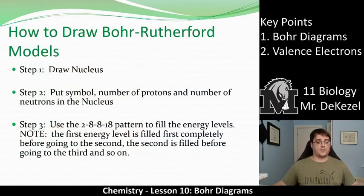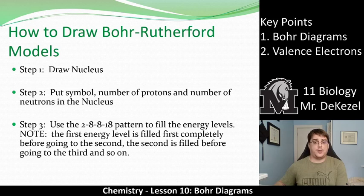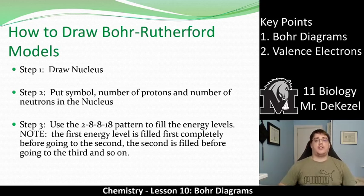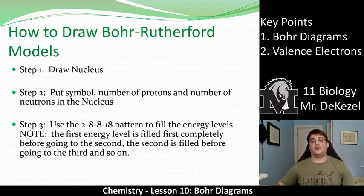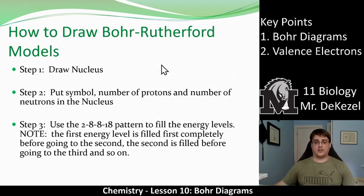So here are the steps for how to draw Bohr-Rutherford models. First, find out how many protons, neutrons, and electrons you have. Then draw the nucleus and put the symbol, the number of protons, and the number of neutrons inside the nucleus. For the third step, use the 2-8-8-18 pattern to fill the energy levels. Always fill the first energy level before moving to the second, and fill each level completely before moving on to the next. Draw the nucleus, put protons and neutrons in the middle, draw the electrons in increasing shell sizes: 2-8-8-18.